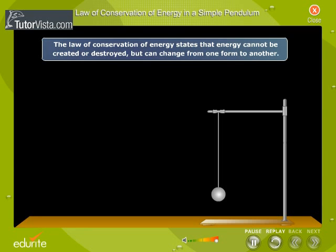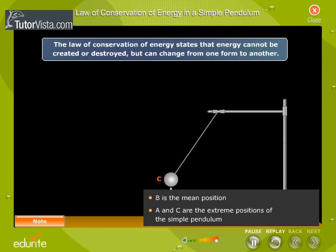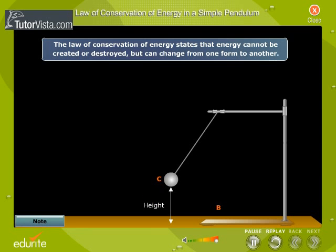Shown here is a simple pendulum. Let B be its mean position. Now allow the pendulum to oscillate. When the pendulum moves to the position C, it gains height.